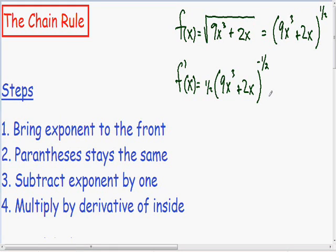And then moving on to our last step, we want to multiply by the derivative of the inside of the parentheses. So since the inside of the parentheses is 9x cubed plus 2x, we want to multiply everything by the derivative of that. So the derivative of 9x cubed is just 27x squared, and the derivative of 2x is just positive 2.